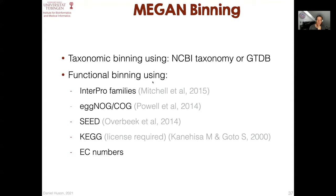There are different classifications supported. For taxonomic binning, MEGAN provides the NCBI taxonomy and also the GTDB taxonomy. For functional binning, you can use Interpro, EggNOG, SEED, and KEGG — for KEGG, a license is required, so you would use the Ultimate Edition of MEGAN rather than the Community Edition. We also recently added a standalone classification of enzymes, the EC numbers.